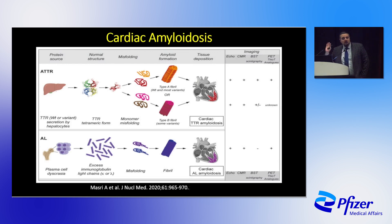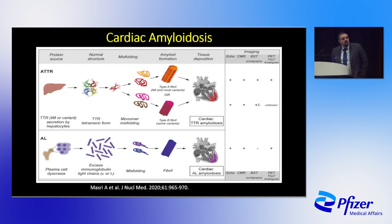With TTR, we all have it — there's not a single human being born without transthyretin. Your liver secretes lots of it and it's very abundant. If biology goes wrong, the tetramer — four parts of the protein — falls apart and starts depositing in the heart and different tissues. If you were born with a mutation that predisposes you to this, the pattern is slightly different: you can have more nerve disease at an earlier age. That's what differentiates wild type from variant disease — variant is something you're born with, while wild type is not.